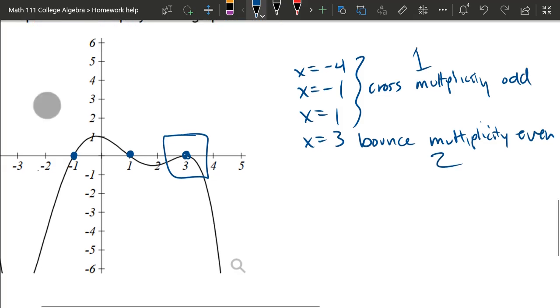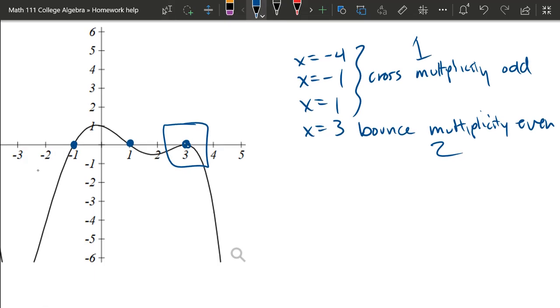There's really only one exception on these problems. If a cross-intercept looks like it flattens out and then crosses, that would have multiplicity 3. That's not occurring on our graph here. That's going to be pretty rare. So most of the crossing are multiplicity 1, bouncing multiplicity 2.